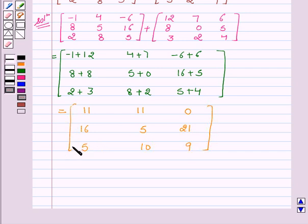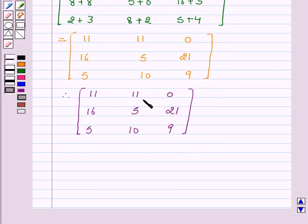Therefore, the sum of the two given matrices is equal to 11, 11, 0, 16, 5, 21, 5, 10, 9.